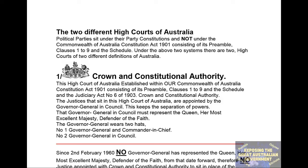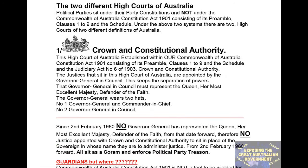Under the above two systems there are two High Courts of two different definitions of Australia. Number one: under the Royal Coat of Arms, which has Crown and Constitutional Authority. This High Court of Australia was established within our Commonwealth of Australia Constitution Act 1901, consisting of its preamble, clauses 1 to 9 and the schedule, and the Judiciary Act number 6 of 1903 — Crown and Constitutional Authority. The justices that sit in this High Court of Australia are appointed by the Governor General in Council. This keeps the separation of powers. That Governor General in Council must represent the Queen, Her Most Excellent Majesty, Defender of the Faith.